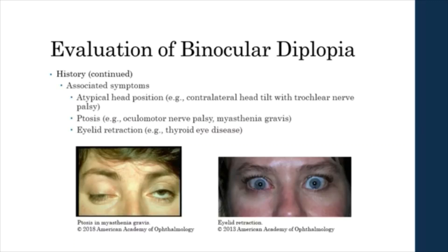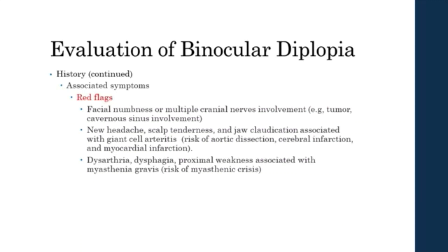Asking about associated symptoms can help elucidate the cause of binocular diplopia. A patient might have an atypical head position, such as a head tilt associated with trochlear nerve palsy. The presence of ptosis can point to an oculomotor nerve palsy or myasthenia gravis. Eyelid retraction can indicate thyroid eye disease. Facial numbness or involvement of multiple cranial nerves can indicate a tumor or involvement of the cavernous sinus. A new headache, scalp tenderness, and jaw claudication in an older patient raise suspicion for giant cell arteritis. Dysarthria, dysphagia, and proximal weakness point to myasthenia gravis.